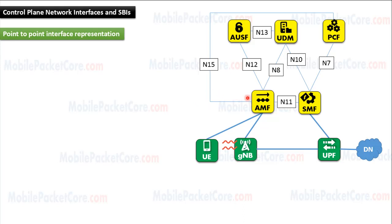As an example, the N11 interface is the interface between the AMF and the SMF. The N12 interface is the interface between the AMF and the AUSF. And the N8 interface is the interface between the AMF and the UDM. This is named the point-to-point interface representation.